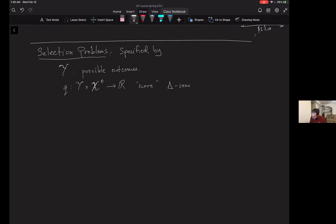We'll say it's delta sensitive if for all possible outcomes, the score of the outcome has low sensitivity. This function satisfies the following: it has sensitivity at most delta. So for every way I fix the outcome y, for each outcome y, the resulting function that takes a dataset as input and produces the score should have low sensitivity.